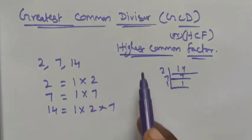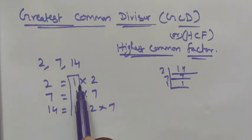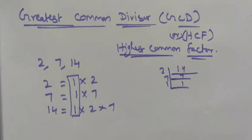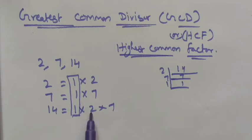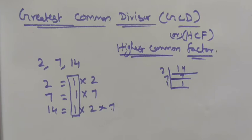Now we want to find out the Greatest Common Divisor. Looking at all three numbers, 1 is common to all. We have 2 in the first and third terms, but not in the second. We have 7 in the second and third terms, but not in the first. So the only element common to all when we factorize is 1, which is the Greatest Common Divisor.